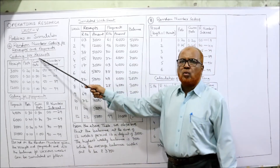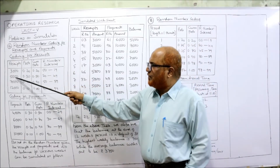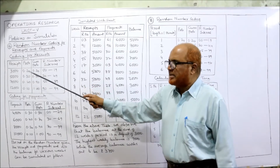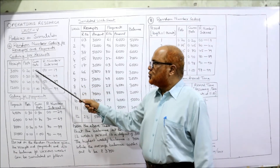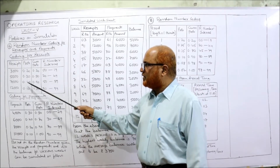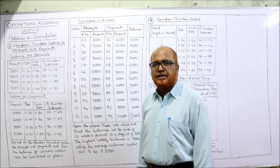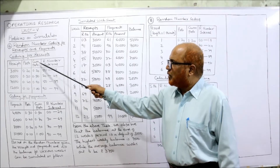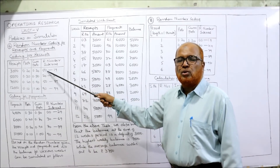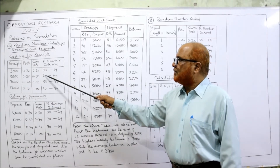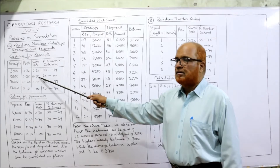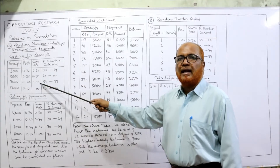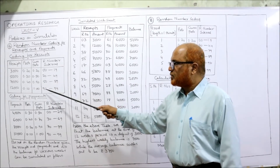For the receipts coding table: receipts are 3,000, 5,000, 7,000, and 12,000 with probabilities 0.20, 0.30, 0.40, and 0.10. The cumulative probabilities are 0.20, 0.50, 0.90, and 1.00. The random number intervals are: 00–19 for 3,000; 20–49 for 5,000 (since cumulative is 0.50, we stop at 49); 50–89 for 7,000; and 90–99 for 12,000.